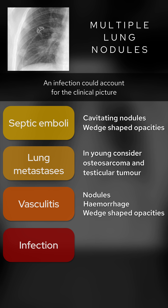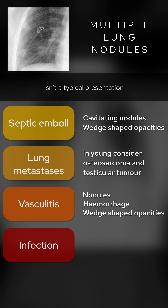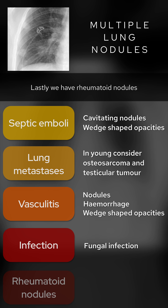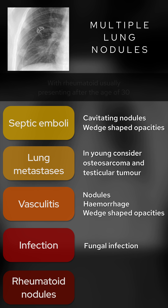An infection could account for the clinical picture. Presentation with discrete large lung nodules on imaging isn't typical, but could be seen with certain organisms such as Aspergillus. Lastly, we have rheumatoid nodules, which doesn't fit the age profile, with rheumatoid usually presenting after the age of 30, though some forms can affect younger patients. There can be small peripheral nodules; however, rheumatoid wouldn't account for the clinical presentation we have here.